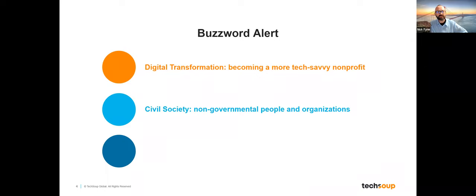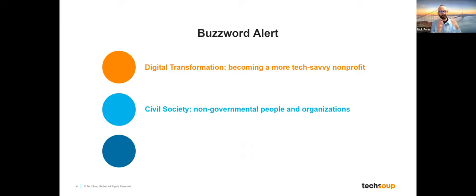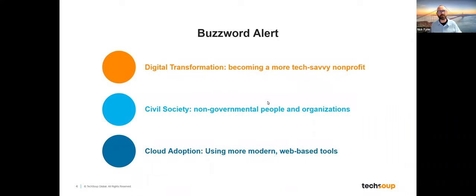A second term is civil society — really just non-governmental people and organizations working to make a better world. Nonprofits are considered part of civil society, that broad group working outside of government, politics, and corporations. The third term is cloud adoption, which simply refers to nonprofits moving towards using cloud-based tools. I call these out because there are terms we sometimes assume everybody knows, but not everybody does.